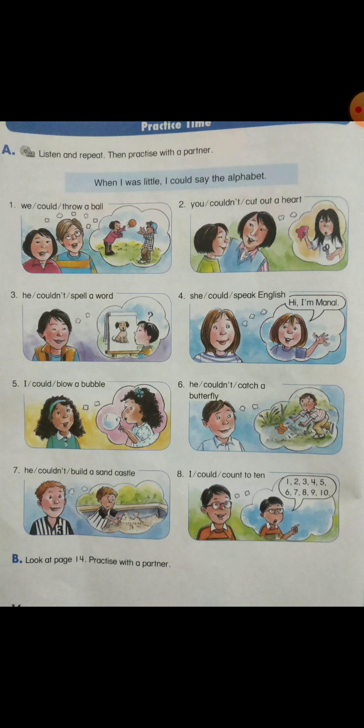Number three: when he was little, he couldn't spell a word. Four: when she was little, she could speak English. Five: when I was little, I could blow a bubble. Six: when he was little, he couldn't catch a butterfly. Seven: when he was little, he couldn't build a sand castle. Number eight: when I was little, I could count to ten.